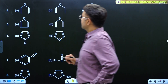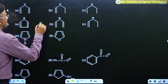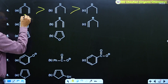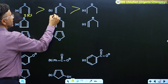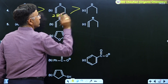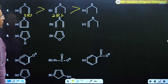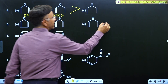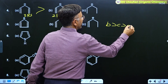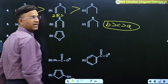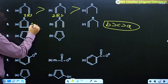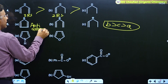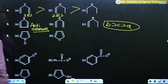In the fourth example, the order is A greater than B greater than C: three resonating structures, then two RS, then no RS. In the fifth example, the order is B greater than C greater than A. A is last because A is anti-aromatic, and anti-aromatic molecules are highly unstable.